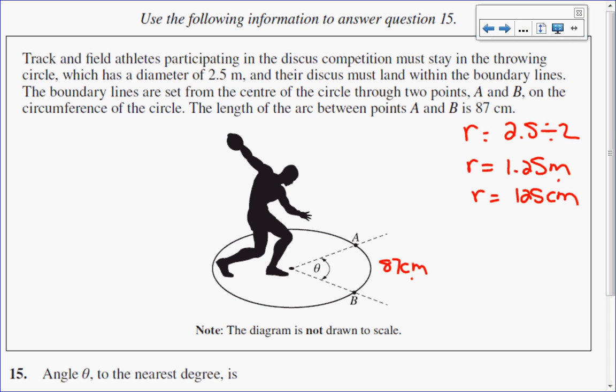Now I want to find the measure of angle theta to the nearest degree. So again, another trick to this question is that when you solve for arc length, it will be given in radians. Then you have to convert it to degrees.